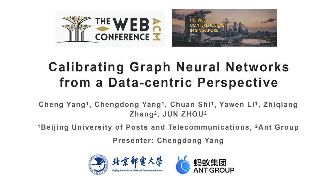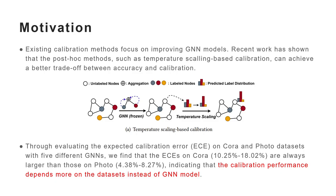First, I would like to introduce the motivation of this article. Existing calibration methods focus on improving GNN models. Recent work has shown that post-hoc methods such as temperature-scaling-based calibration can achieve a better trade-off between accuracy and calibration. Through evaluating the expected calibration error, ECE, on Cora and Photo datasets with five different GNN models, we find that the ECEs on Cora are always larger than those on Photo, indicating that calibration performance depends more on the datasets instead of the GNN model.